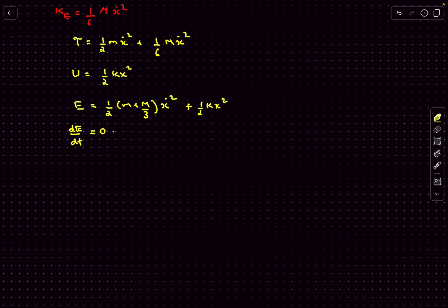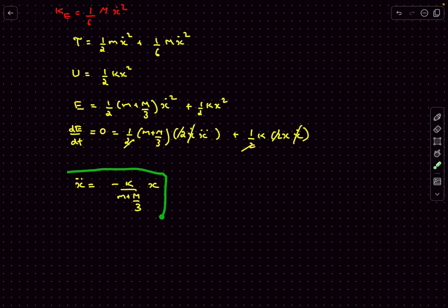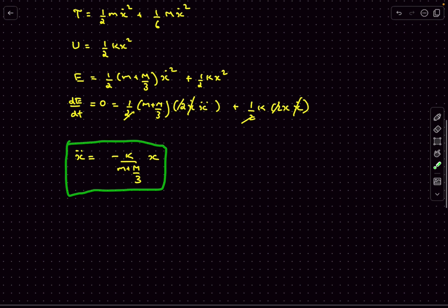The derivative of ẋ² is 2ẋ·ẍ, and the derivative of x² is 2x·ẋ. We can cancel out the ẋ terms since there's a zero on the left side. We finally end up with the equation: ẍ = −k/(m + M/3) · x. For the normal spring-mass system where we ignore the mass of the spring, ẍ came out to be −(k/m)·x.